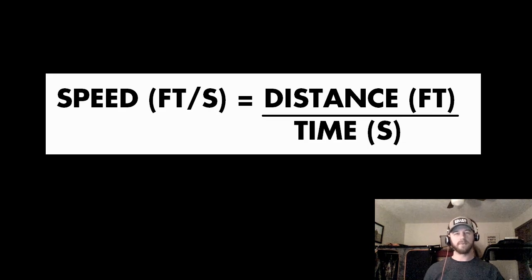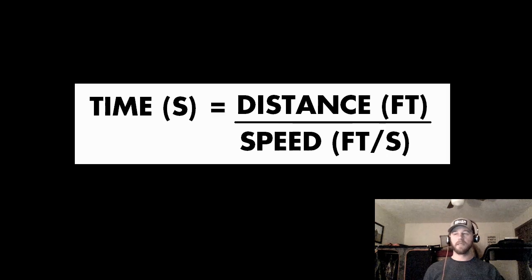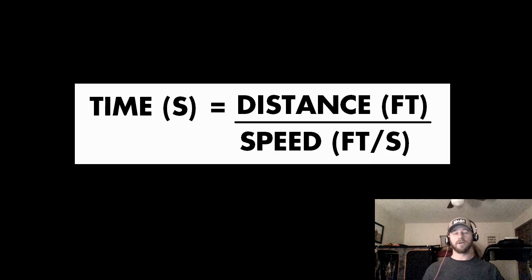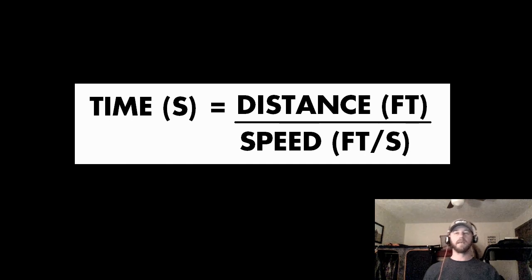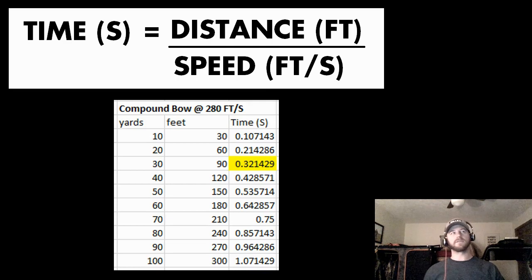With those simplifications, the equation is pretty straightforward: speed in feet per second — which is how all crossbows and compound bows are advertised — equals distance divided by time. We know the speed of our crossbow and the distance we're shooting. What we don't know is the time. So we rearrange the equation to solve for time: time equals distance divided by speed.